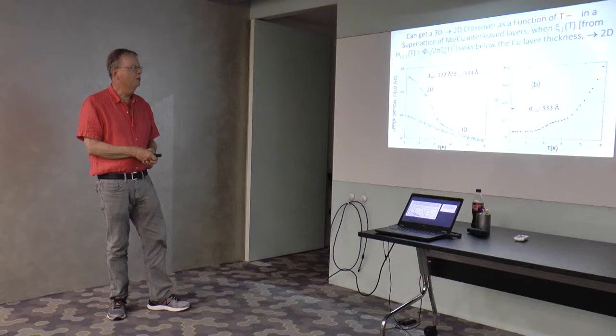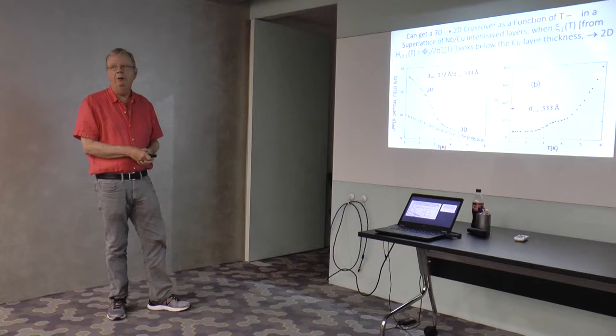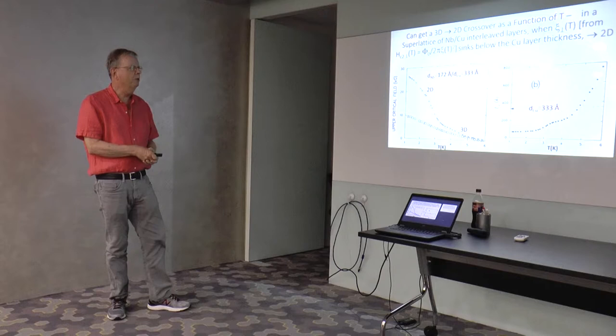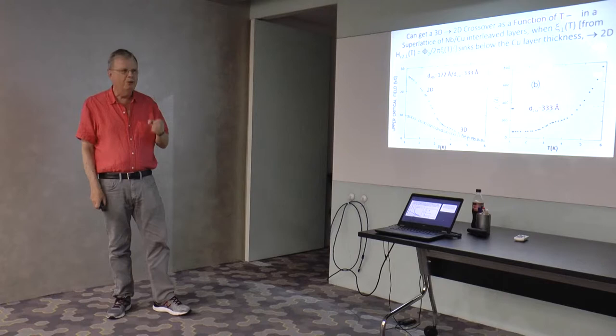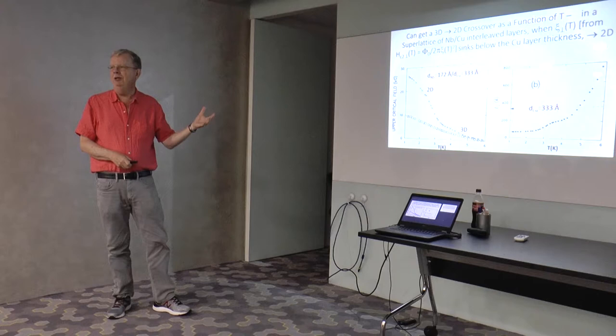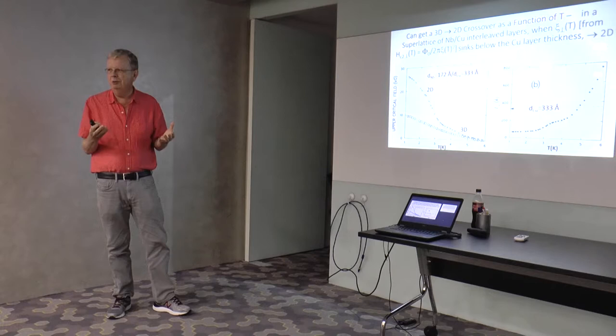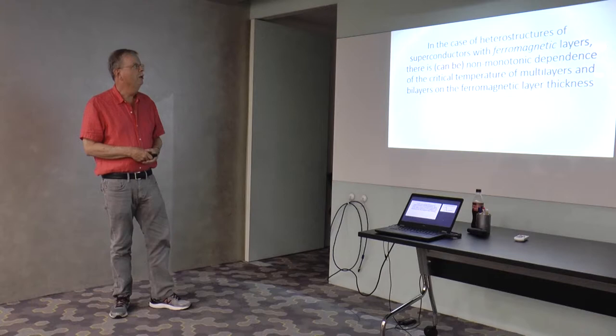Here we see a dimensional crossover. Traditionally, if a GRE were ever this hard, this would be a canonical question. They would say: here's some critical field data for a superconductor, what's happening at this strange point? And it's a two-dimensional to three-dimensional crossover. That's all it is. It's not hard.